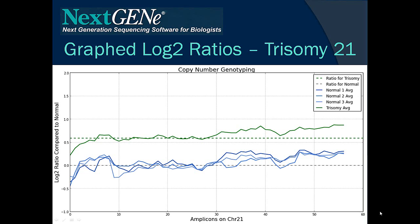And so what we get is this nice, clear result. I also smoothed out the data using a rolling average of 10 amplicons. This is chromosome 21 amplicons — there are about 55 amplicons left after all that processing. The average of the trisomy replicates was around the expected ratio of about 0.6, indicating a 50% increase in coverage on a log2 scale, whereas the non-trisomy samples were all pretty much close to a ratio of 0, indicating the same level of coverage as the control sample.